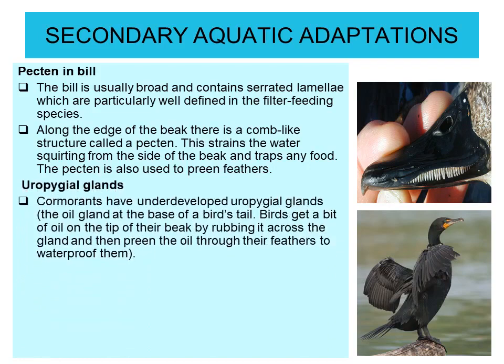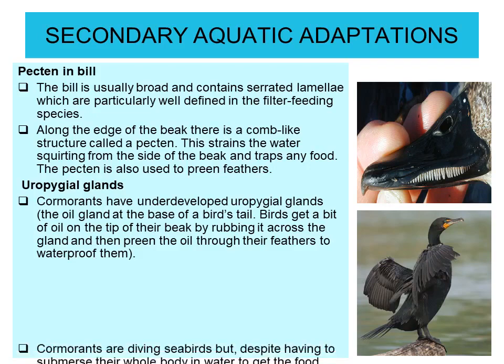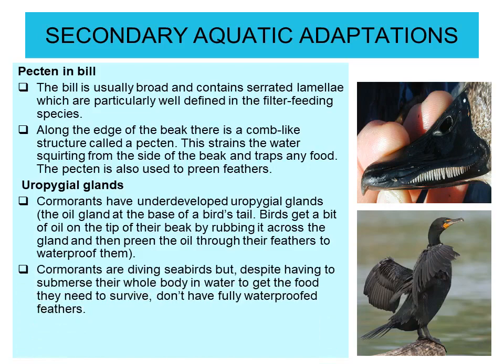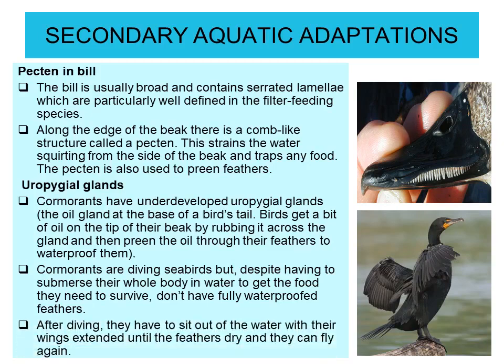The pecten is also used to preen feathers. Next is the uropygeal gland — cormorants have an underdeveloped uropygeal gland, the oil gland at the base of a bird's tail. Birds get oil at the tip of their beak by rubbing it across the gland and then preen the oil through their feathers to waterproof them. Cormorants are diving seabirds but do not have fully waterproof feathers, so they dry their wings in open air. After diving, they sit with wings extended until the feathers dry and they can fly again.